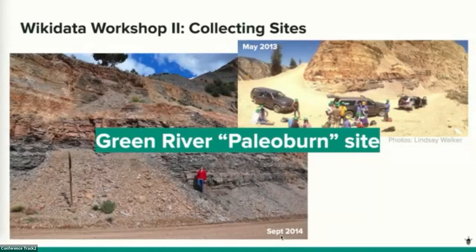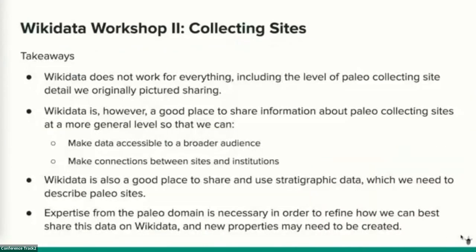The second workshop built on experience from the first to explore using Wikidata to curate shared community knowledge about paleo collecting sites. Twenty participants gathered virtually and began by defining information needs and assessing how well these might fit into a Wikidata model. For reducing the digitization burden including georeferencing, we would ideally like to share very specific geography, geology, and collecting event data — but Wikidata isn't quite the right tool for that level of specificity.